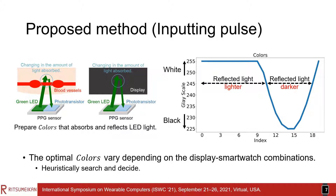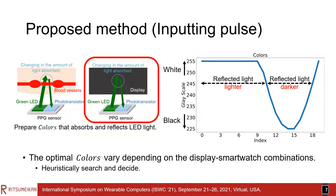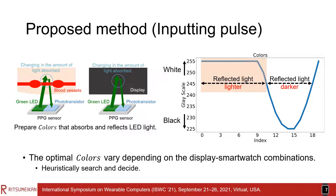I will introduce the proposed method. The blood stream absorbs and reflects LED light. To enable this property using displays, colors that absorb and reflect LED light should be prepared. Colors are grayscale data. The more white the display is drawn, the brighter the reflected light will be. And the more black the display is drawn, the darker the reflected light will be. The optimal colors vary depending on the display-smartwatch combinations, so we conducted heuristic research and decided the optimal colors.